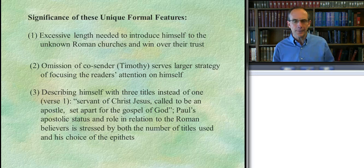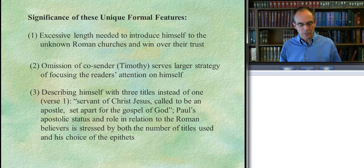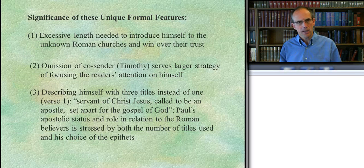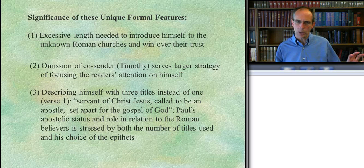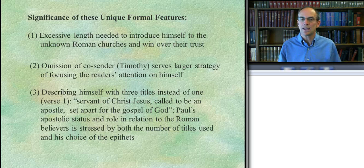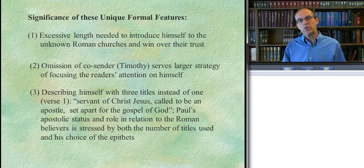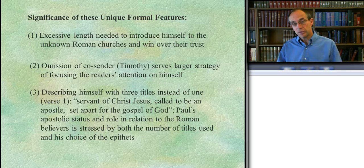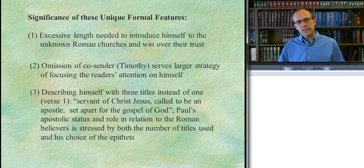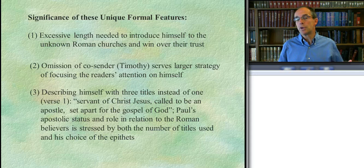This would explain why he uses not just one title but three. And it's not just the number of titles, it's also their content. The first one is servant — doulos of Christ Jesus. A lot of Romans scholars see this as an allusion to the Old Testament prophets who introduced themselves as douloi — servants of God. Now Paul introduces himself as a doulos of Christ Jesus — a servant of Christ Jesus — hinting that he stands in the tradition of the prophets, that like them he has an authoritative word of God that his hearers should accept.